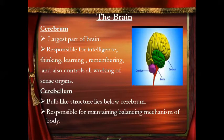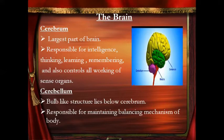Cerebrum — it is the largest part of the brain and it performs functions like intelligence, thinking, learning, and memory. It also controls the working of the different sense organs. Because it performs so many functions of our body, it is the largest part of the brain.